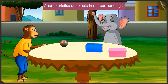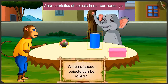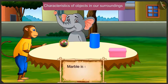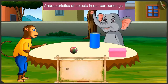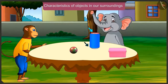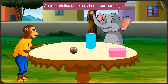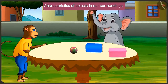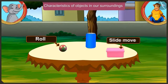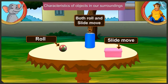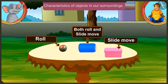We can also roll the tin can. The marble is round, so we can easily roll it. This tin can is cylindrical - cylindrical objects have a flat surface on top and bottom, so we can slide them. But because the surface is also curved, we can roll them too. You have understood very well which objects can be rolled, which can be slid, and which can be both rolled and slid.